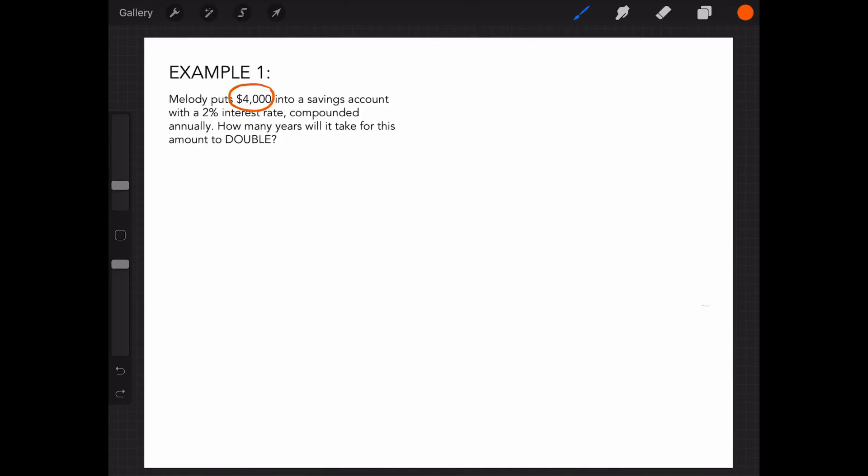Melody puts $4,000 into a savings account with a 2% interest rate compounded annually. How many years will it take for this amount to double?